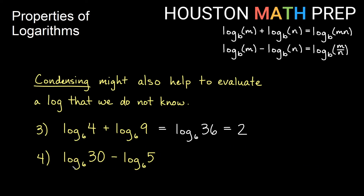Similarly, log base 6 of 30 minus log base 6 of 5: 30 and 5 are not nice powers of 6. But if we condense into a single log and make the subtraction into division, 30 divided by 5 gives us 6. So we have log base 6 of 6, which asks: 6 to what power gives us 6? The answer is 1, since 6 to the first power is 6.